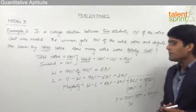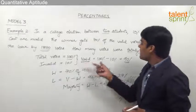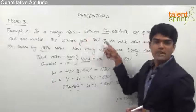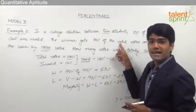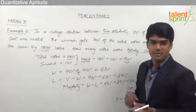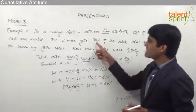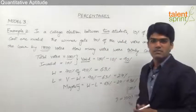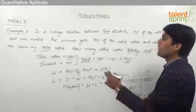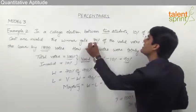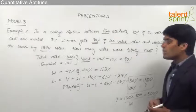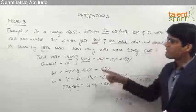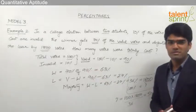One important point to be careful about: since valid votes are 90% and the winner gets 70% of the valid votes, do not mistakenly assume the loser obtained the remaining 20% (90 minus 70). That 20% should not be taken as the loser's percentage of votes, because the winner got 70% of the valid votes — not 70% of the total votes. So we take it as 70% of 90%, not 70% of 100%.